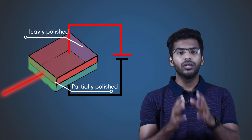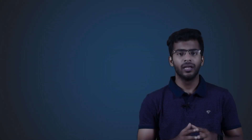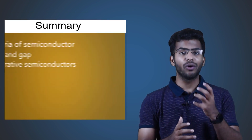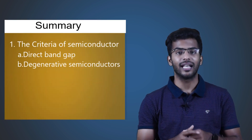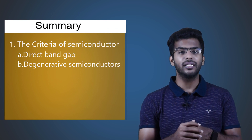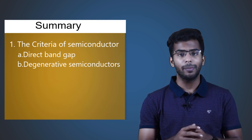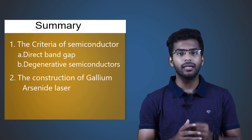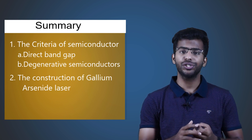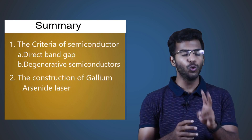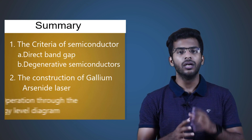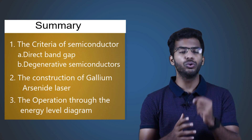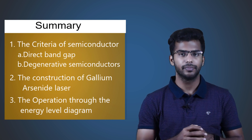This is all about the semiconductor laser. To sum up, we learnt about the criteria for semiconductor materials such as direct bandgap and degenerative semiconductors. Then we learnt about the construction of gallium arsenide laser, which involves homojunction, heavy doping, and two polished surfaces. Finally, we learnt about the operation through the energy level diagram. In the next video, we look at the applications of lasers, which will be the last video of this module.